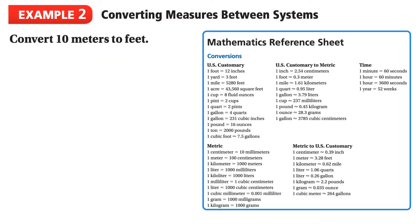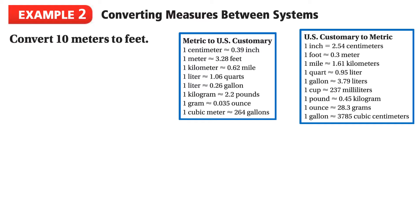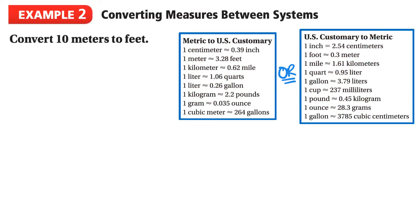In our second example we're going to be converting measures between systems - converting 10 meters to feet. Looking at our reference sheet, we have a section for US to metric and metric to US. We'll use these to help solve this question, and we need to figure out which chart is the better method. In the first chart, one meter is approximately - those two squiggly lines mean approximately - 3.28 feet.